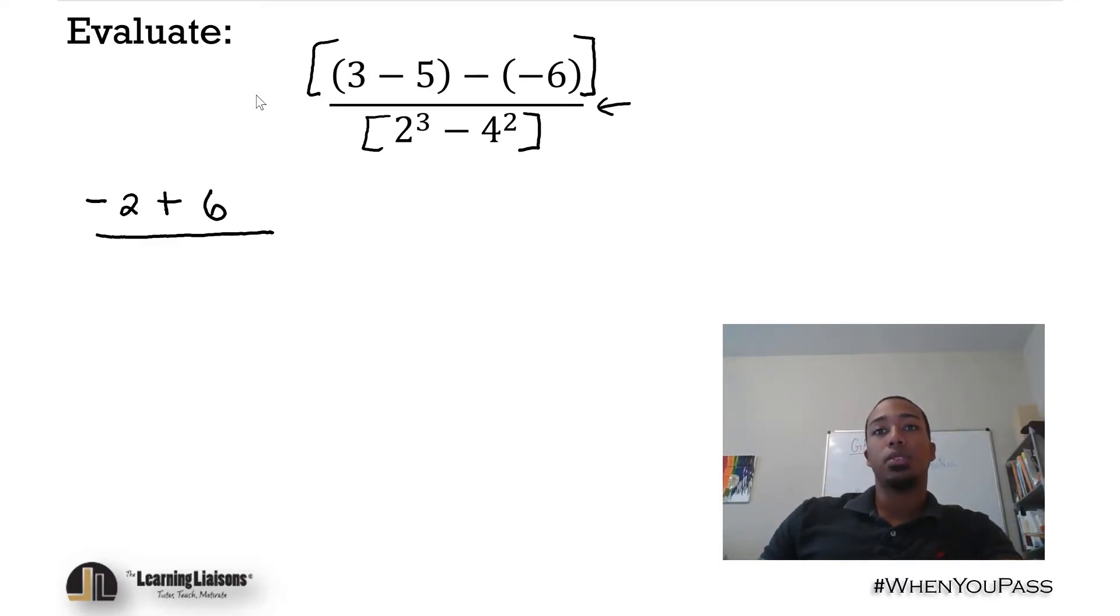We have 2 cubed in the denominator—I'm going to leave that there for a second. So negative 2 plus 6, what would that be? That's like saying 6 minus 2. We can rearrange that, that's called the commutative property of addition. So that would be 4 for our numerator. Now let's take care of the denominator.